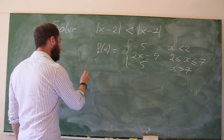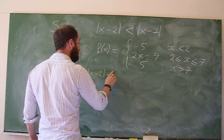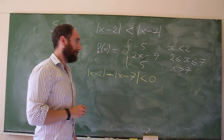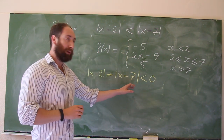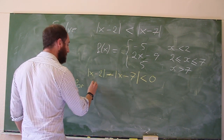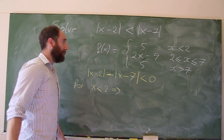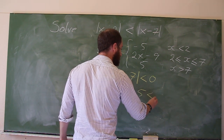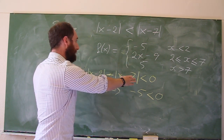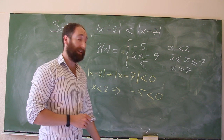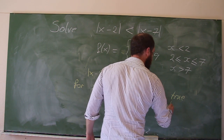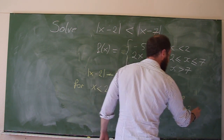The inequality was |x minus 2| minus |x minus 7| less than 0. Let's solve it using the piecewise function. For the region x less than 2, we have minus 5 less than 0. That is indeed true. So all x less than 2 solve the inequality.